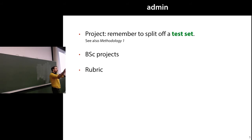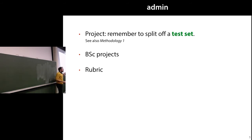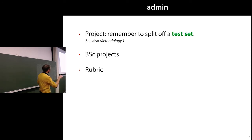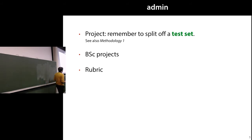Split your whole bag of data into a test set and a training set, and split your training set into training and validation. Then do your hyperparameter optimization on your validation set and not on your test set. Save your test set for the very last thing you're going to do in your project — the day before you hand in your final report, you run all your experiments on your test set, only once. Which means you need to split it off now, and don't look at it again until the end of the project.